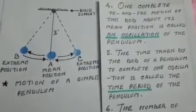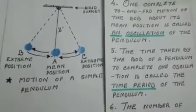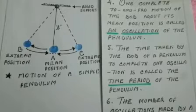One complete to and fro motion of the bob about its mean position is called an oscillation of the pendulum. For example, in the figure, the motion of the bob from A to B, then from B to C, and back to A is called one oscillation.